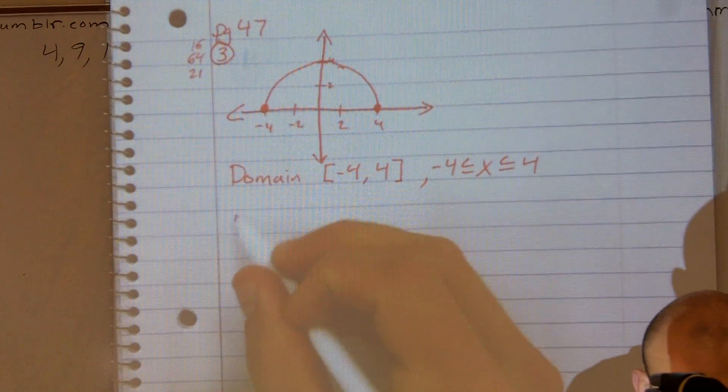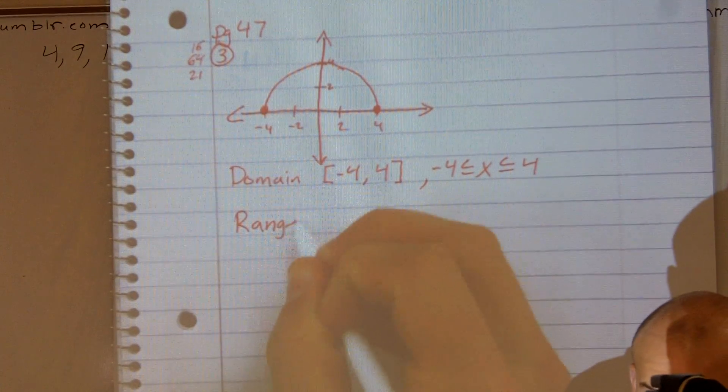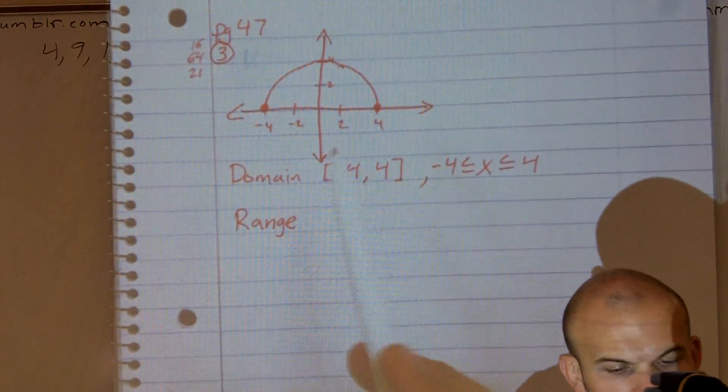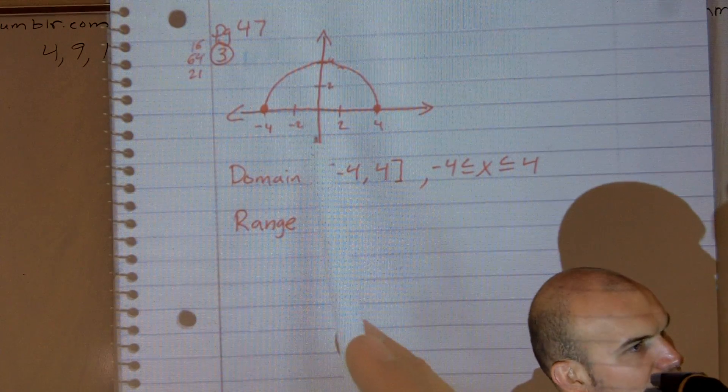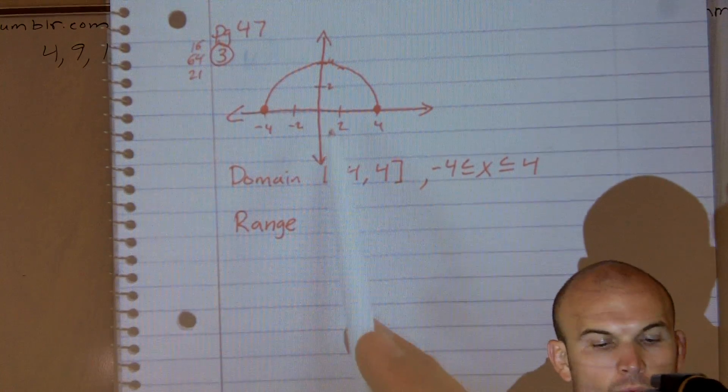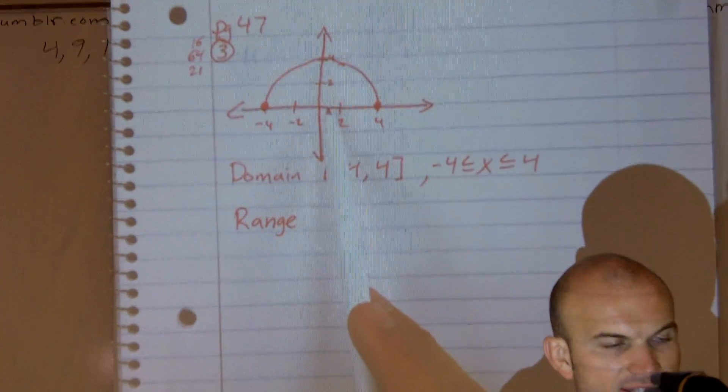Then we'll look at the range. Now my range, if you see, for what values is my range defined? So what values for y is it defined in the graph?